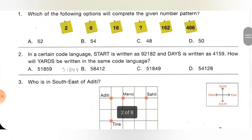Second one: in a certain code language, START is written as 9, 2, 1, 8, 2 and DAYS is written as 4, 1, 5, 9. How will YARDS be written in the same code language? S=9, T=2, A=1, R=8, T=2. D=4, A=1, Y=5, S=9. So YARDS: Y=5, A=1, R=8, D=4, S=9. That gives us 5, 1, 8, 4, 9. Option C is the correct answer.